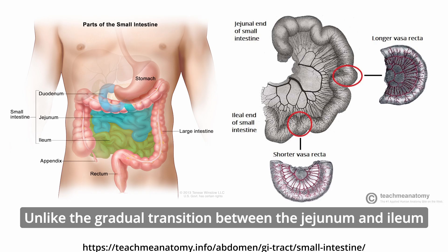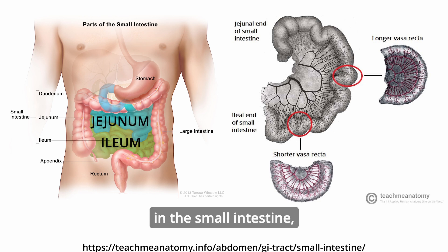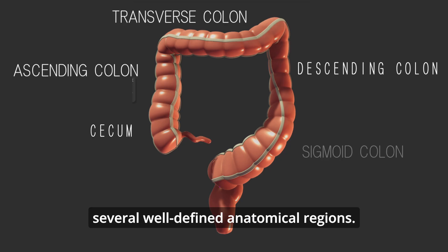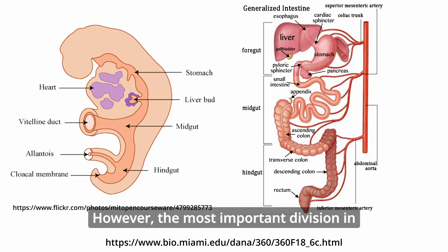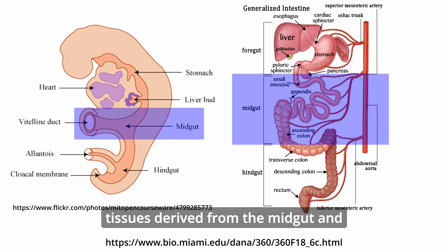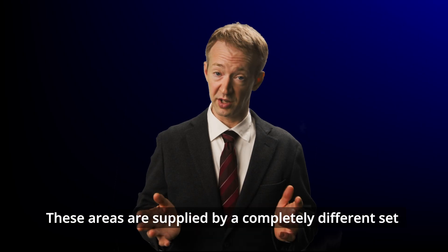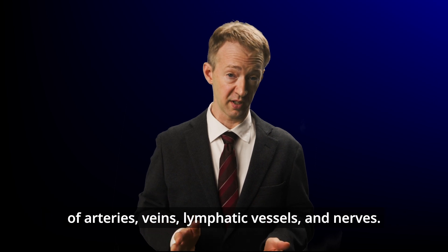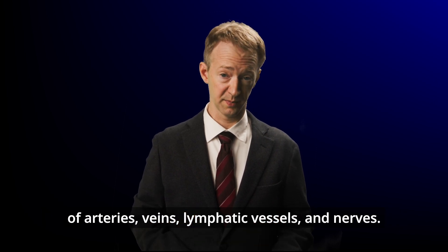Unlike the gradual transition between the jejunum and ileum in the small intestine, the large intestine can be divided into several well-defined anatomical regions. However, the most important division is the distinction between tissues derived from the midgut and tissues derived from the hindgut. These areas are supplied by a completely different set of arteries, veins, lymphatic vessels, and nerves.